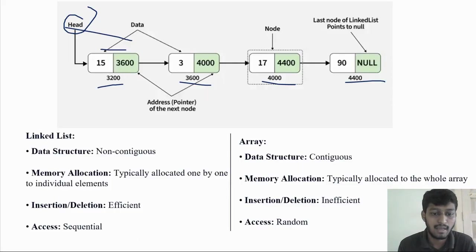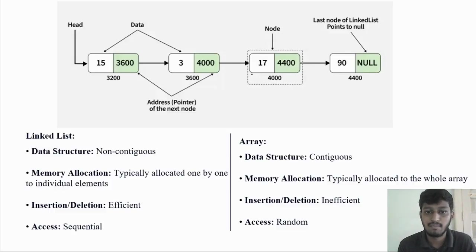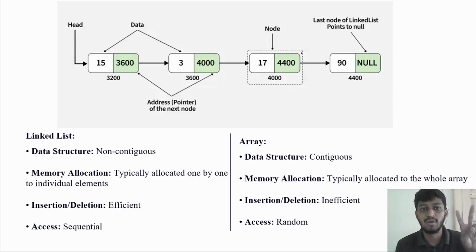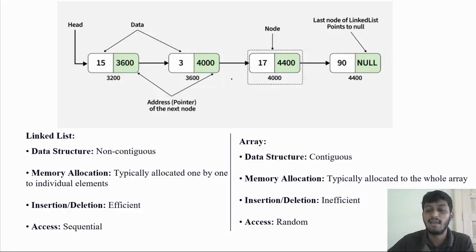Here we have a full diagram explanation. This is our node — it is in two parts. The data values are 15, 3, 17, 9. This is our data. Each data node can be seen, and the next node is stored, pointing to the next node.